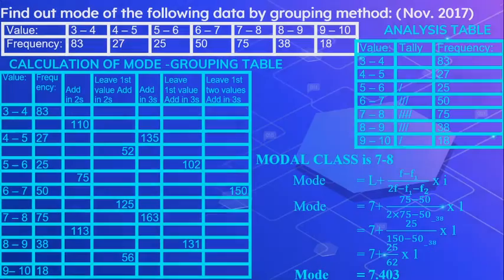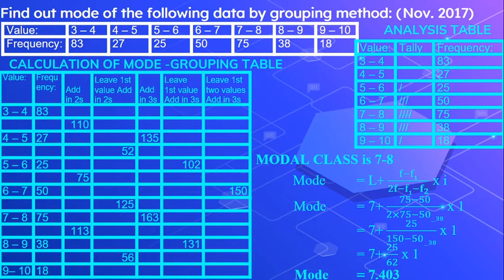Here to give you a presentation on mode using the grouping and analysis table. Mode is normally found using the formula, but there are times when we have to apply the grouping table and analysis table. If the question wants you to do it using the grouping and analysis table, do it that way; otherwise, go ahead with the usual method. The grouping and analysis table is used when you have similar high frequencies, since mode is normally identified by the highest frequency. When there are nearby similar high frequencies, we use a grouping table so that there is no deviation in identifying the mode.